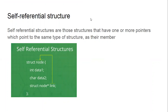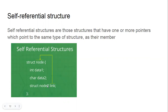A self-referential structure in C starts with the keyword struct, followed by a name and its members. What makes it self-referential is the addition of one more member — a pointer to the same structure type. Because this pointer refers back to the same struct, and is declared with a star indicating it's a pointer, the structure is said to refer to itself — that is why it is called a self-referential structure.